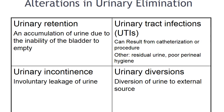Cystitis is an irritated bladder causing a frequent and urgent sensation of need to void. Irritation to the bladder may cause hematuria (blood in the urine); urine will appear concentrated and cloudy because of the presence of white blood cells. Infection can spread to the upper urinary tract — to the kidneys — causing pyelonephritis, with signs and symptoms including flank pain, tenderness, fever, and chills.